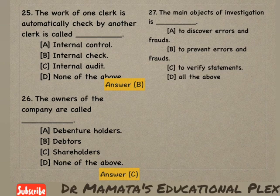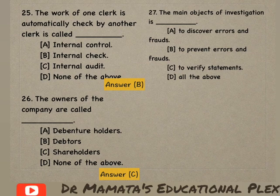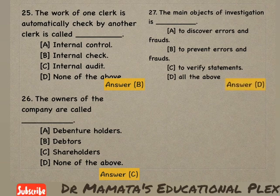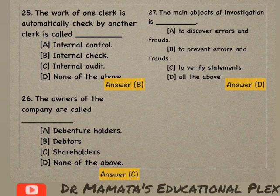Next question: The main objects of investigation are — to discover errors and frauds, to prevent errors and frauds, to verify statements, or all of the above? All of the above is the correct answer, option D.